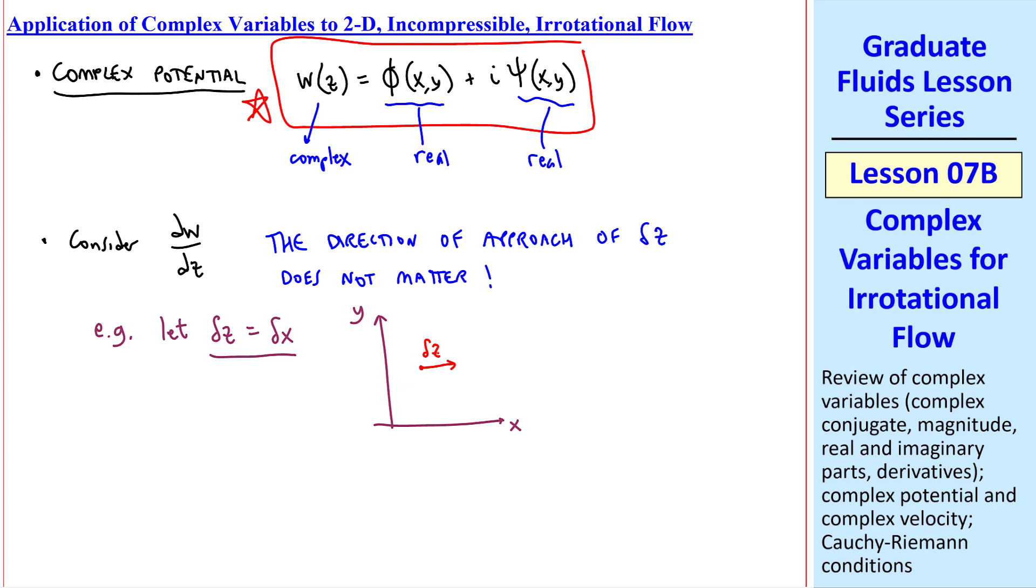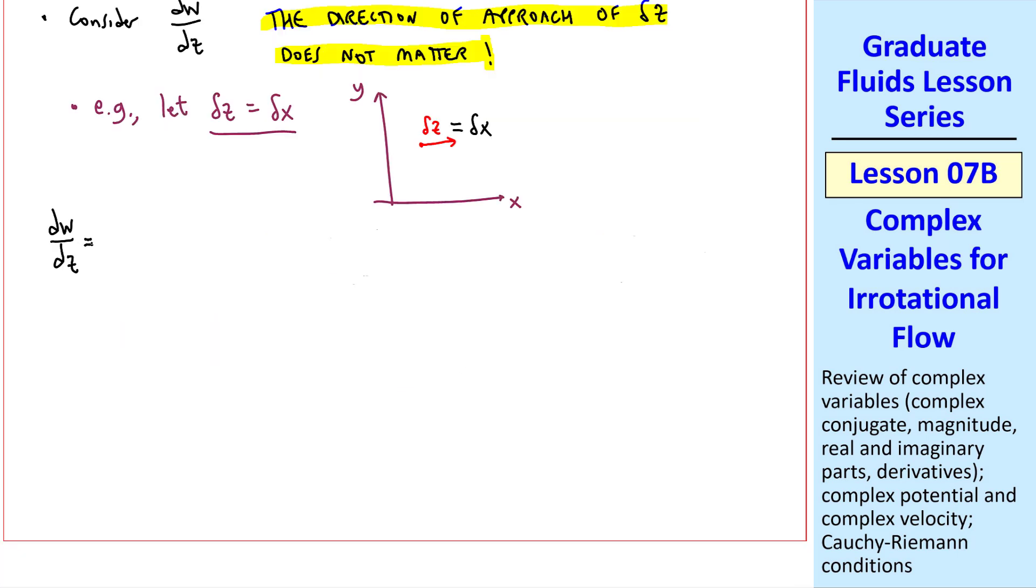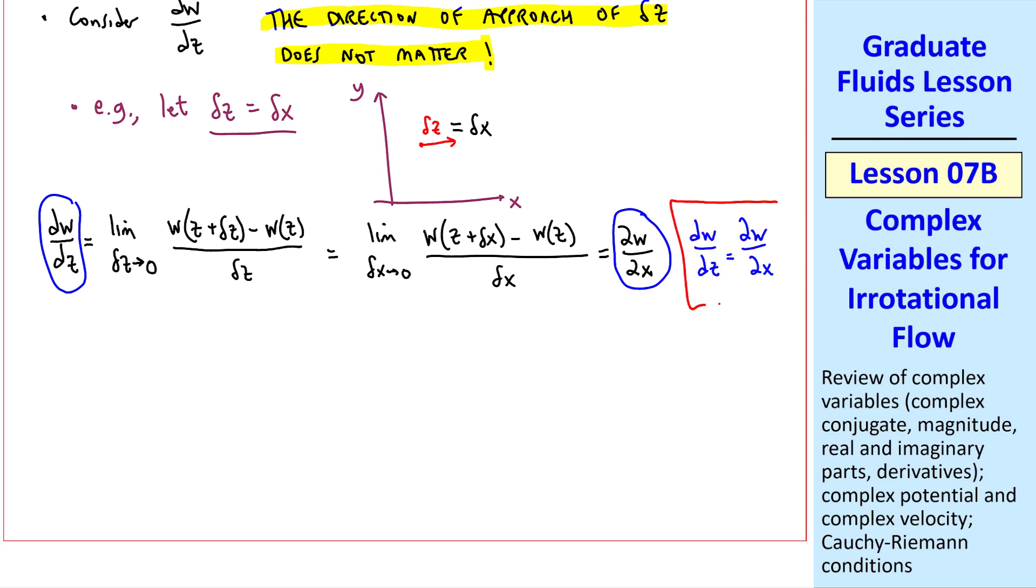By definition of derivative, dw dz is the limit as delta z goes to zero of w of z plus delta z minus w of z over delta z. But here we're letting delta z be delta x, so we can also write the limit as delta x goes to zero of w of z plus delta x minus w of z over delta x. But this is the fundamental definition of del w del x, so dw dz is equal to del w del x. We get the derivative by approaching the derivative in the horizontal direction.